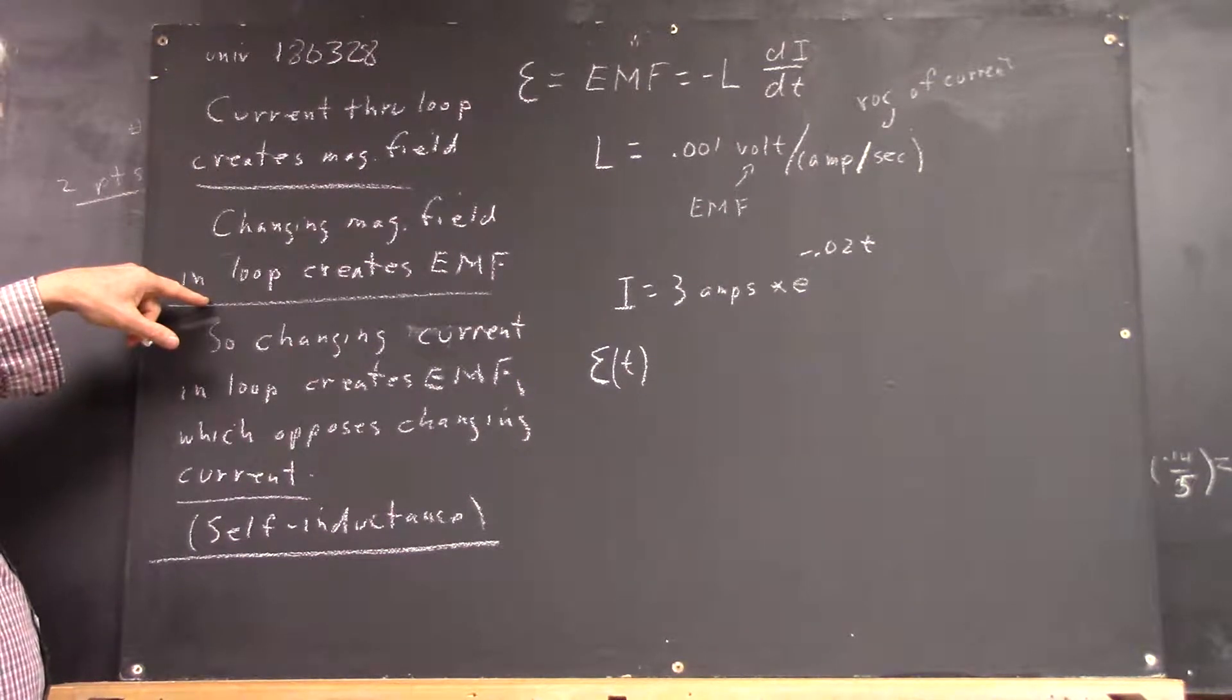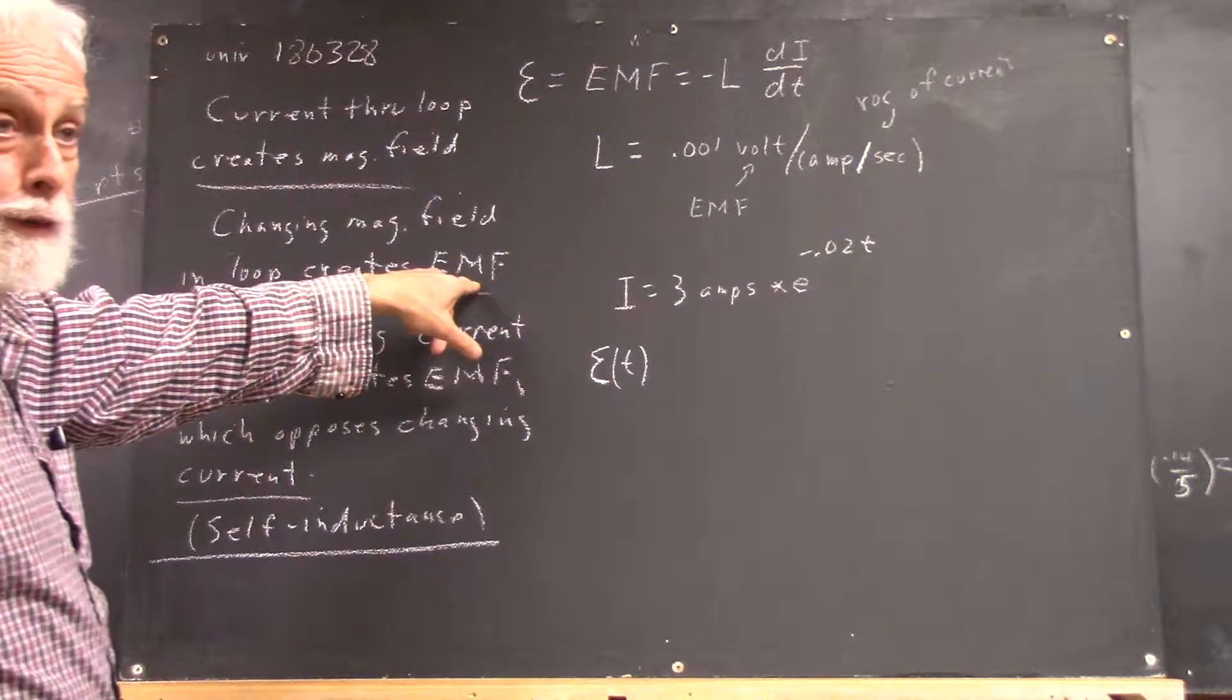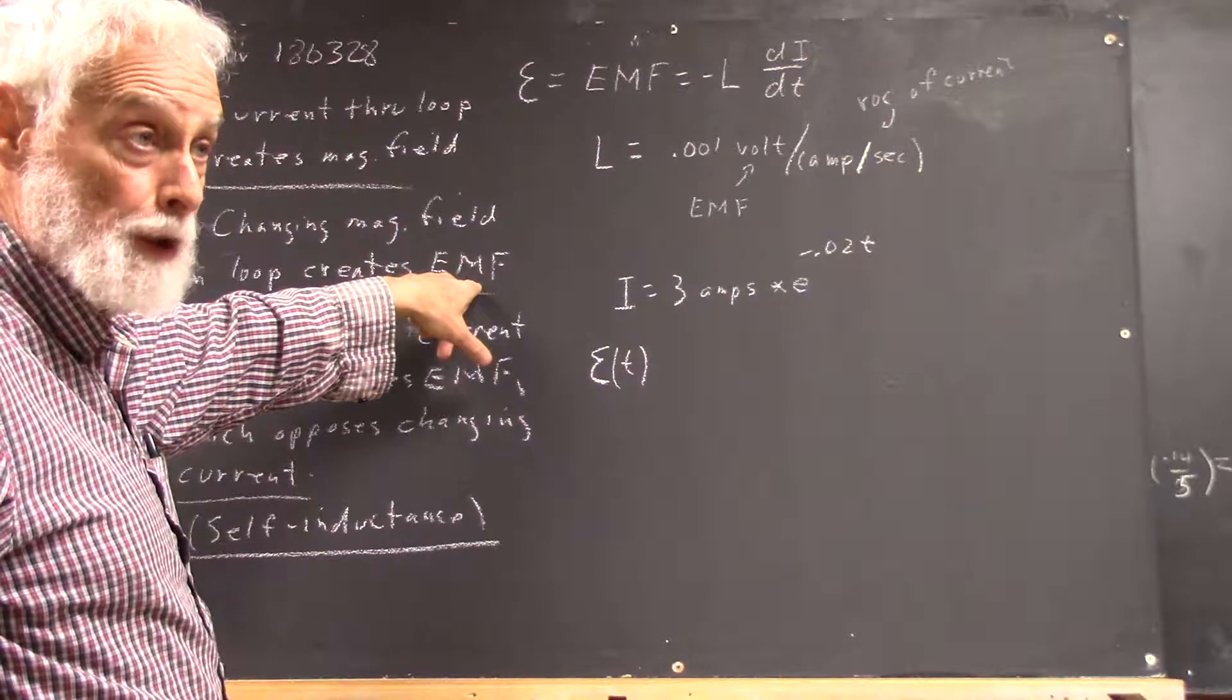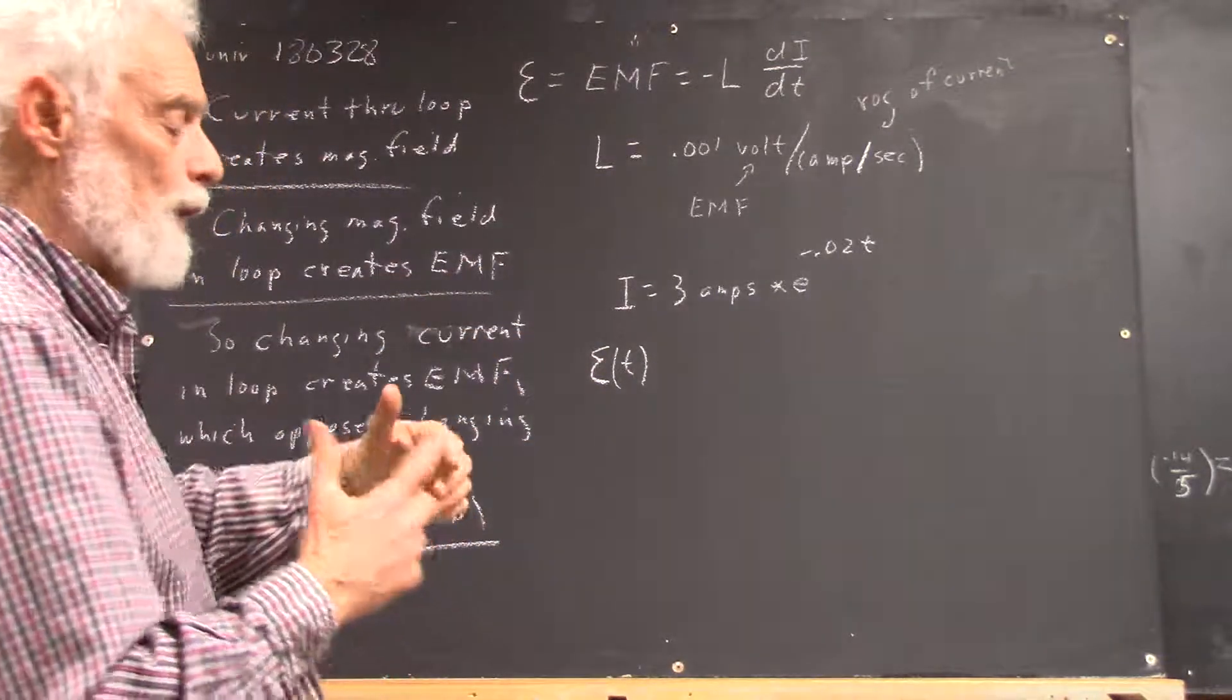Changing magnetic field in a loop creates an EMF, which is electromotive force or the voltage. Potential difference around the loop.